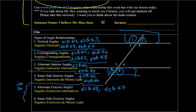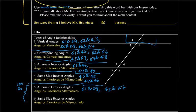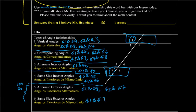And the last one that we have is same side exterior. Exteriores — exterior again. So same side. Mismo lado. Uno y 7 están en mismo lado. 1 and 7 are in the same side. Y por eso son ángulos exteriores de mismo lado — they're same side exterior angles. And then our last ones: 2 and 8. Ángulo 2 y ángulo 8.